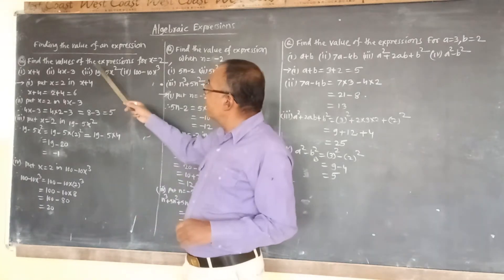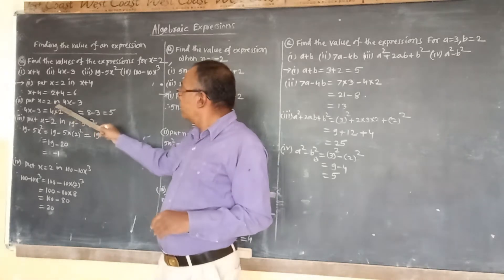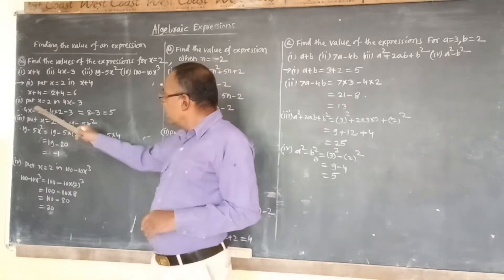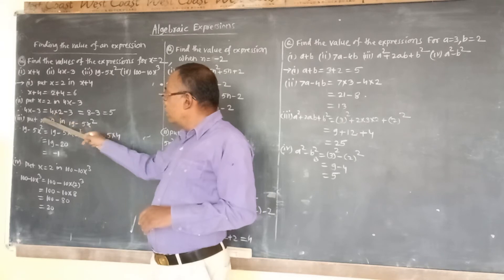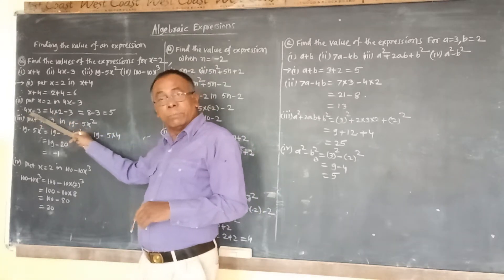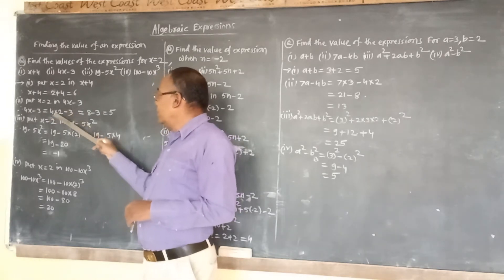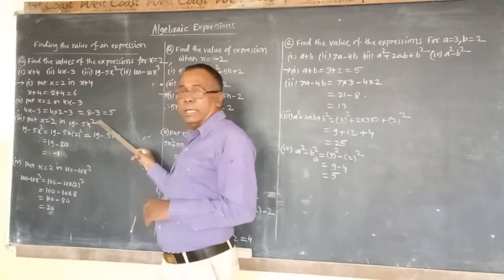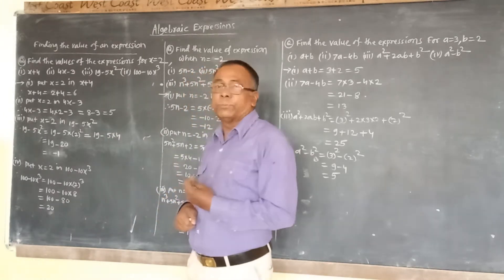For the second expression, put x equal to 2 in 4x minus 3. Therefore, 4x minus 3 equals 4 into 2 minus 3. The sign between 4 and x is multiplication, so 4 into 2 is 8, and 8 minus 3 equals 5. So the value of the second expression is 5.